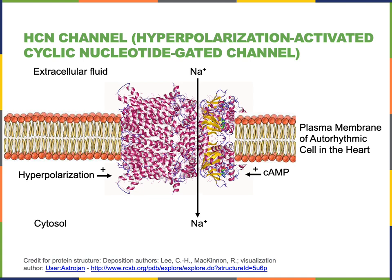Here we see the structure of the HCN channel — the hyperpolarization-activated cyclic nucleotide-gated channels responsible for spontaneous depolarization during the pacemaker potential phase in autorhythmic cells. These sodium channels open in response to hyperpolarization at the end of the falling phase, but they are also gated by cyclic AMP, enabling the autonomic nervous system to regulate the slope of the pacemaker potential and thereby regulate heart rate.